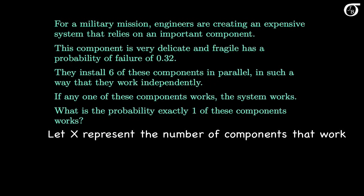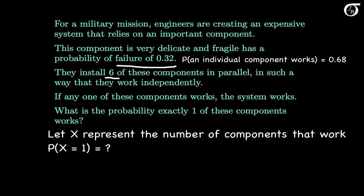Let the random variable x represent the number of components that work. We want to find the probability that x equals 1. We have a fixed number of components — 6 — and the probability that any one component fails is 0.32, so the probability any one component works is 1 minus that, or 0.68. Since the components work independently, knowing whether one fails doesn't change the probability of another failing.